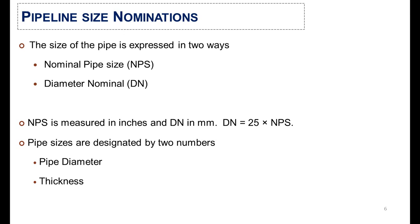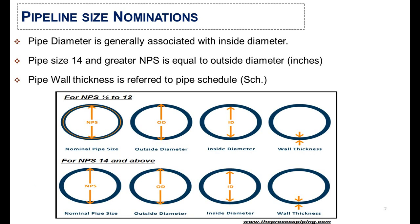The size of the pipe is expressed in two ways: first is Nominal Pipe Size (NPS), and second is Diameter Nominal (DN). NPS is measured in inches and DN in millimeters, and both are interconvertible. Pipe size is designated by two numbers: pipe diameter and thickness. Pipe diameter is generally associated with inside diameter. For pipe size 14 NPS and greater, NPS equals outside diameter. Pipe wall thickness is referred to as the pipe schedule.